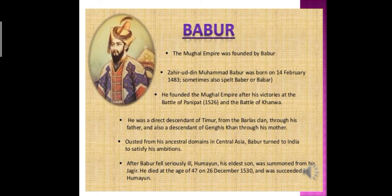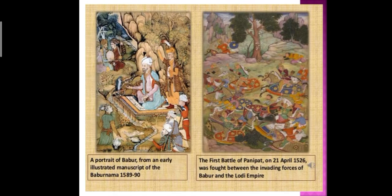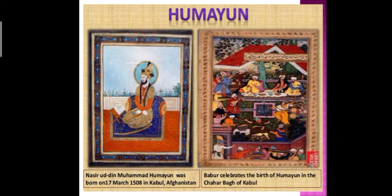Babur was succeeded by his son Humayun, who ruled twice in India. Humayun is also known as the weakest emperor. Although he was a brave fighter, he was not a good military leader like his father. He enjoyed feasting and luxury rather than attending to his public duties, and was slow to make decisions concerning the administration of the empire.